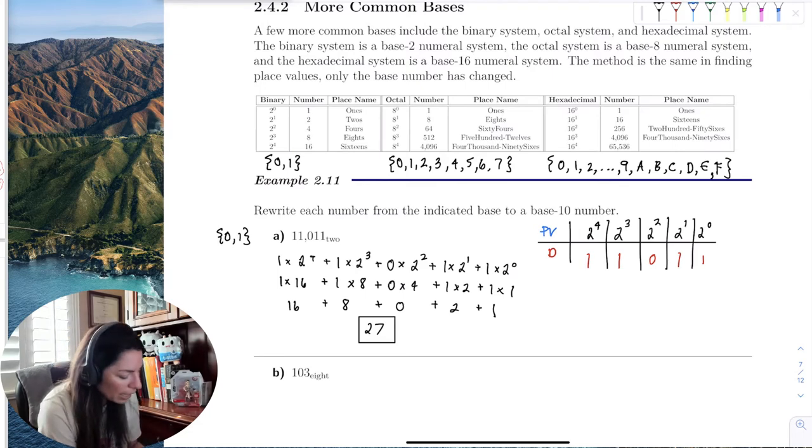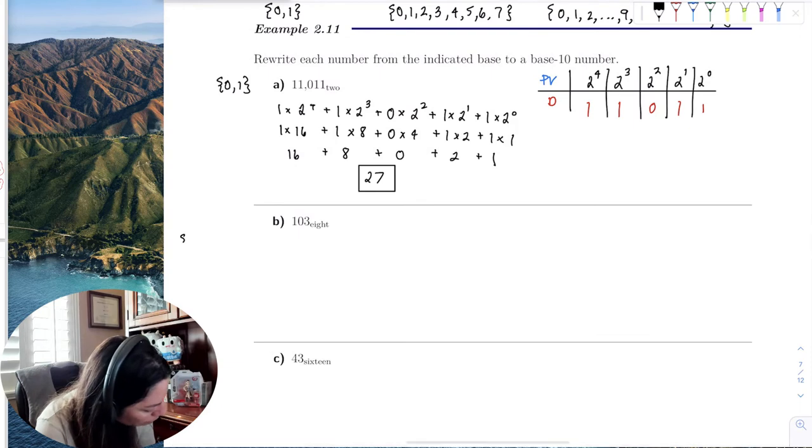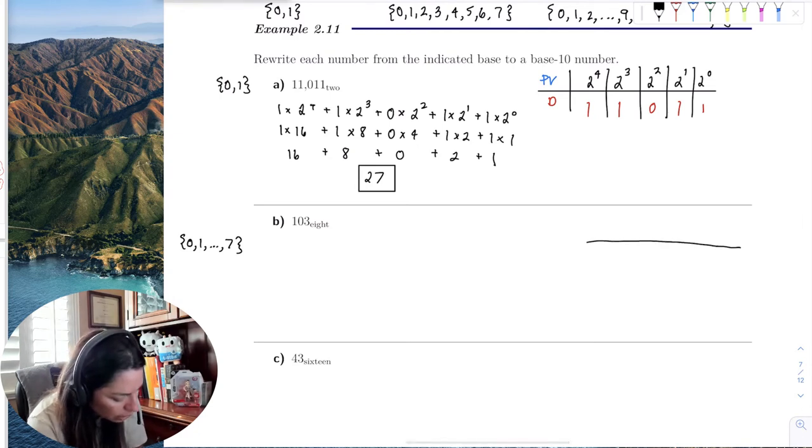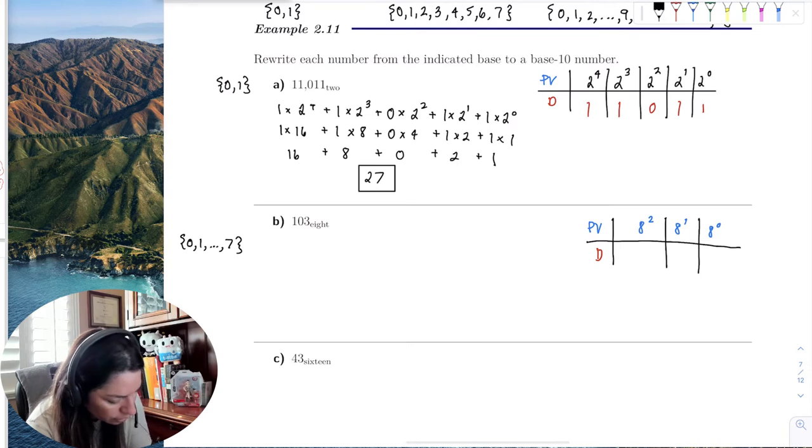Let's try base 8. Base 8 is 0, 1 through 7. All the digits have to be from 0 to 7, and that looks okay. If I want to convert this to base 10, here's place value, here is digits. The place value is only 3, so 8 to the 0, 8 to the first, 8 squared. My digits are 1, 0, 3.